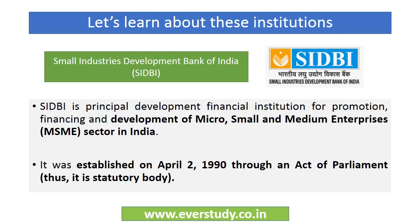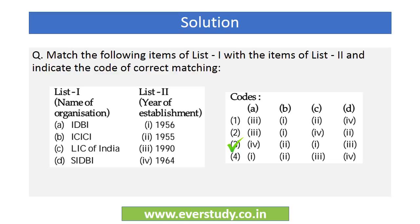SIDBI, the Small Industries Development Bank of India, caters to the micro, small, and medium enterprise (MSME) sector in India. It was established on 2nd April 1990 as a statutory body through a separate act of Parliament. Now we can easily solve the matching question: ICICI–1955, LIC–1956, IDBI–1964, SIDBI–1990. The correct answer is option number three.